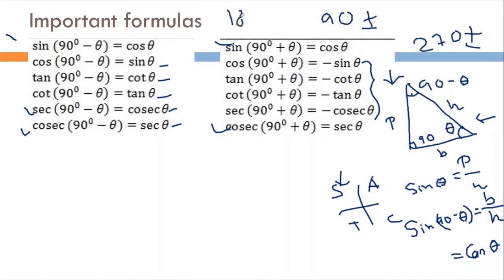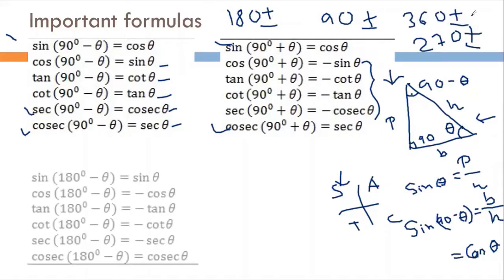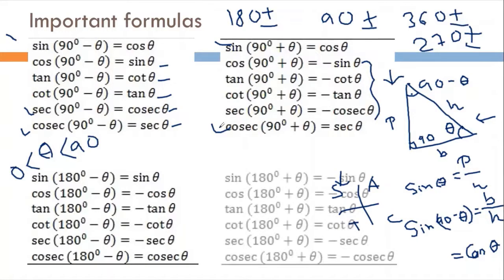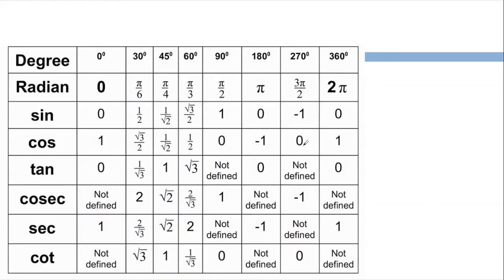For 180 degrees plus or minus theta, and 360 degrees plus or minus theta, sin will not change to cosine — sin remains sin. The sign depends on the quadrant. For example, sin(180 minus theta) equals sin theta, and cos(180 minus theta) equals negative cos theta. We already know that sin(90 minus theta) equals cos theta.